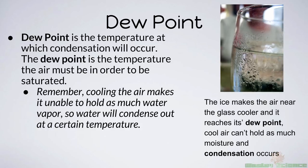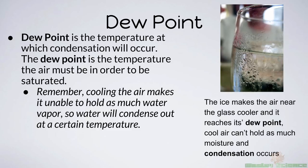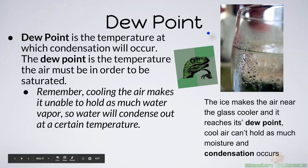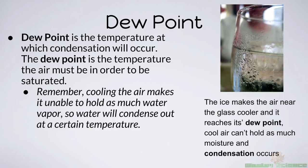The dew point is the temperature at which condensation will occur — the temperature the air must reach in order to be saturated. When saturated, you will see condensation. Cooling the air makes it unable to hold as much water. The classic example: why does condensation form on a glass of ice water? The ice makes the air near the glass cooler, so the air reaches its dew point. The water vapor can no longer stay in the air because it's saturated, so it becomes liquid and condensates on the glass — because water is very adhesive and likes to stick to surfaces.